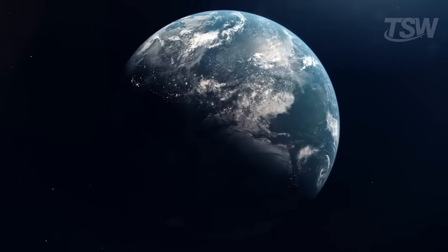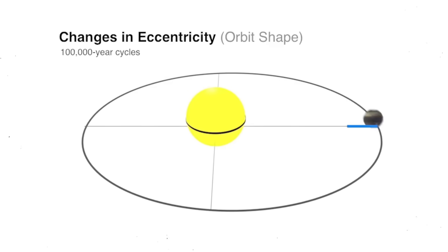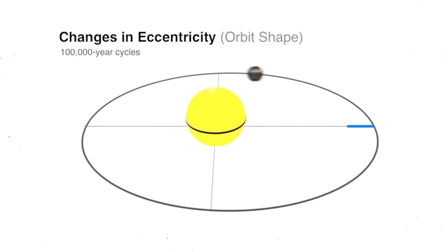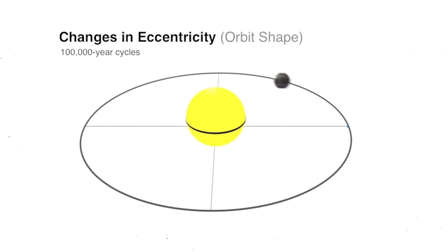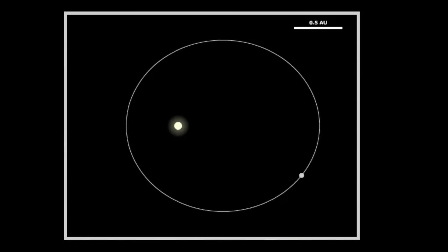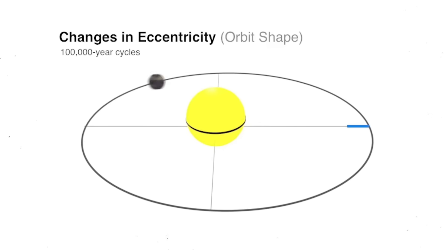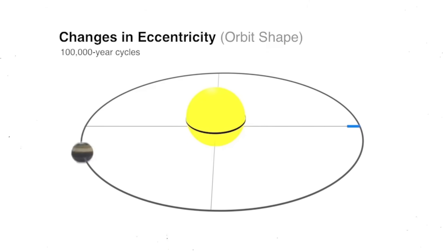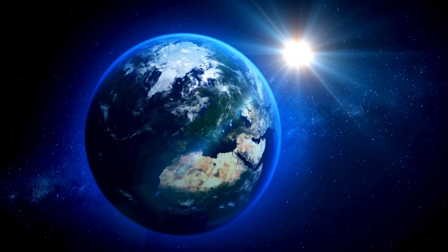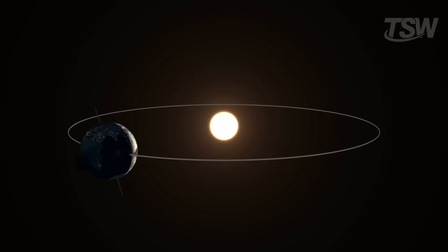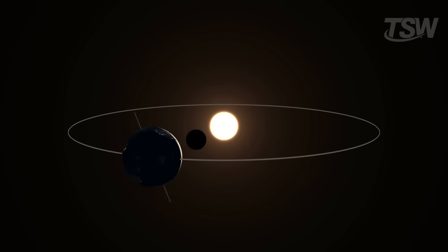Let's take a closer look at each of these factors, starting with eccentricity. Earth's orbit around the Sun isn't a perfect circle. It's an ellipse that can become more or less elongated over a cycle that lasts about 100,000 years. When the eccentricity is higher, the difference between Earth's closest and farthest distance from the Sun becomes more significant, meaning there's a greater variation in solar radiation received throughout the year. When the orbit is more circular, that difference almost disappears and insolation is distributed more evenly. This variation doesn't change the total energy received during the year that much, but it does have a major influence on the contrast between the seasons, especially when combined with the other factors.